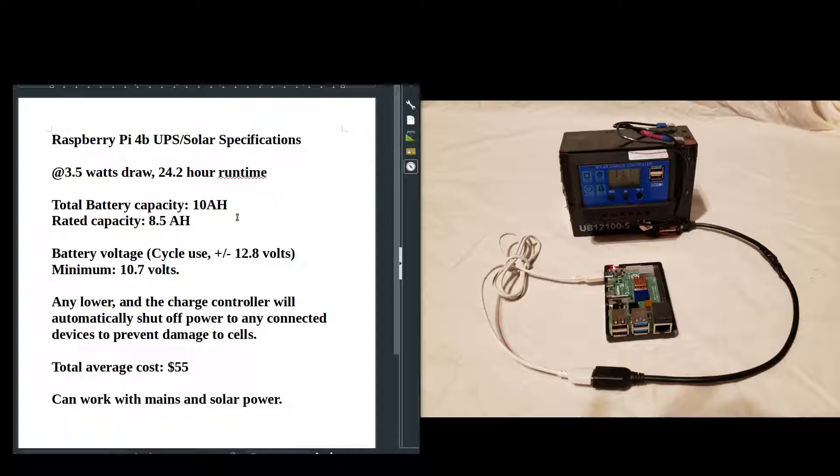Our battery capacity is 8.5 amp hours rated, with a minimum discharge of 10.7 volts which is pretty common for most lead acid batteries. The beauty of the charge controller you may see pictured on the front here is that it automatically shuts off any connected loads to prevent the battery cells from being damaged should the voltage drop below 10.7 volts.